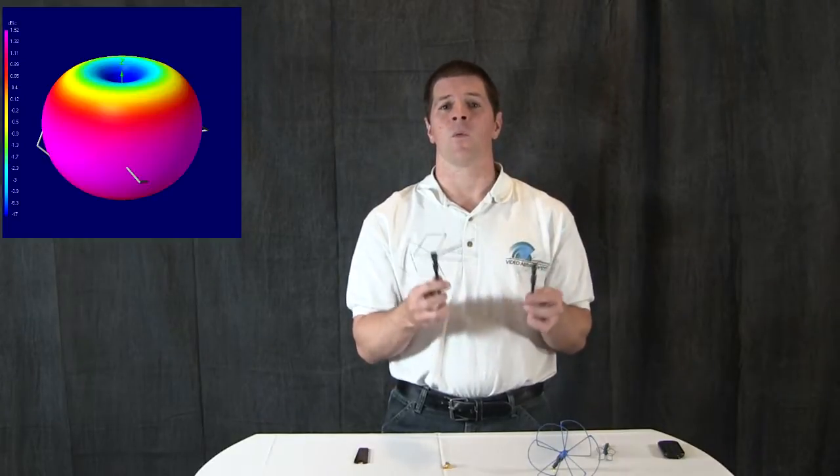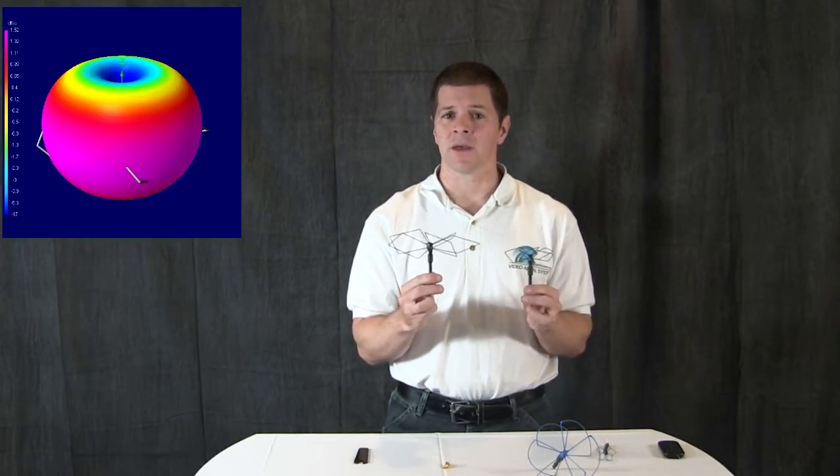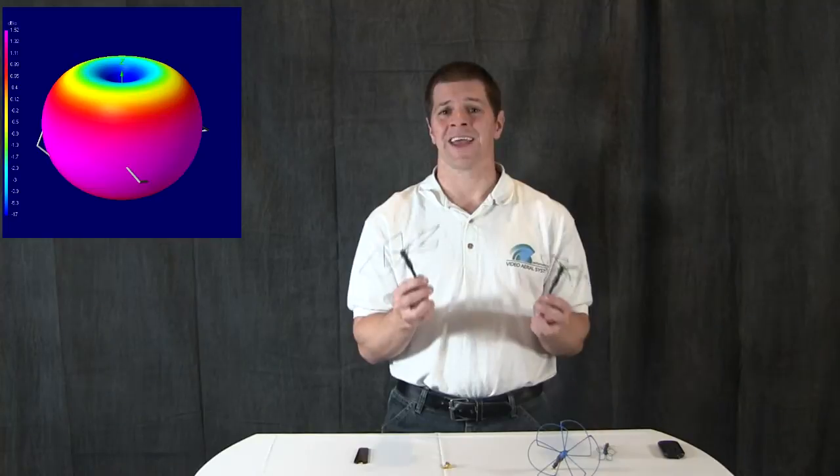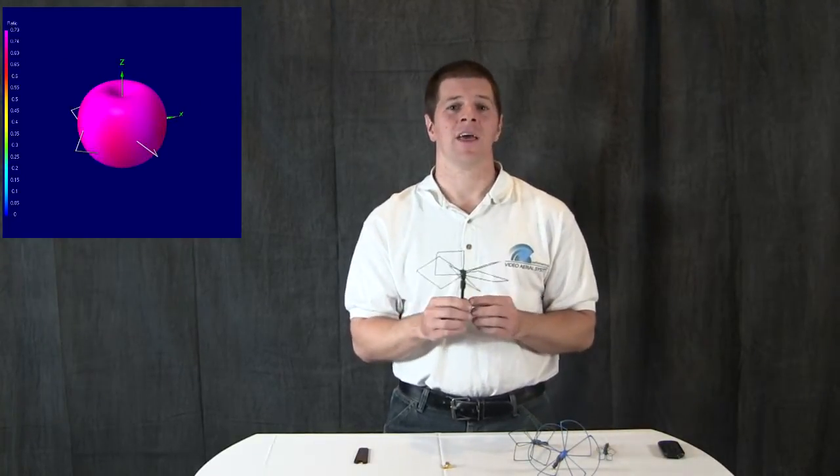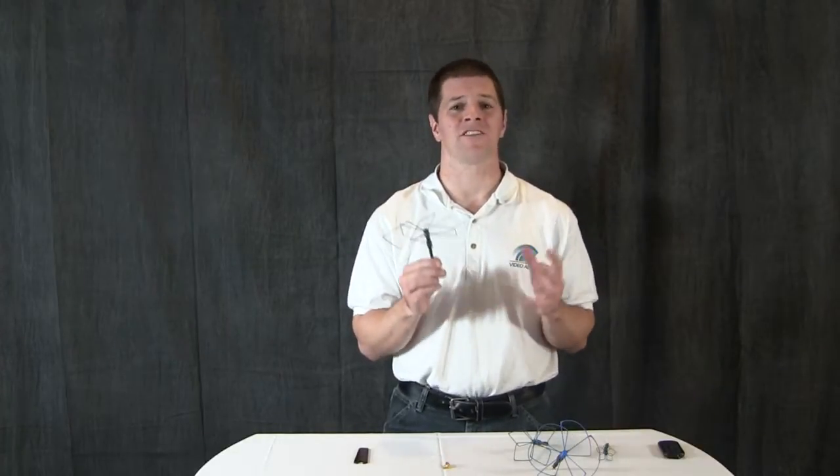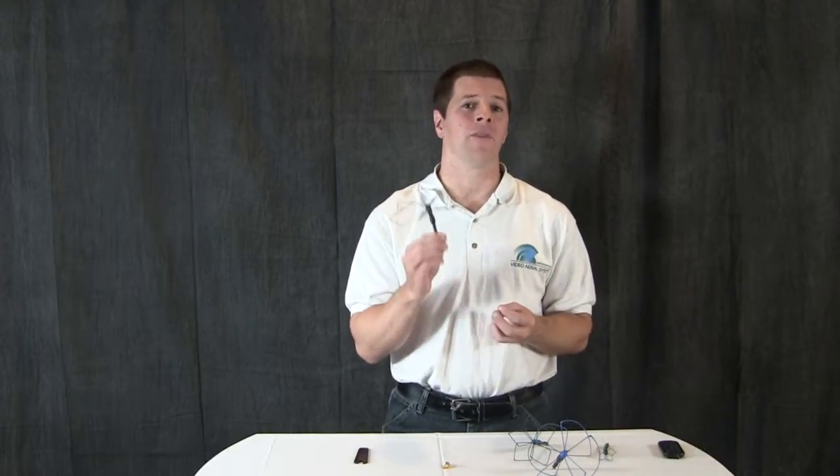The Airblade is a 1.5 dB circularly polarized antenna with an axial ratio of 0.77. This makes it one of the best circularly polarized omni antennas on the market.